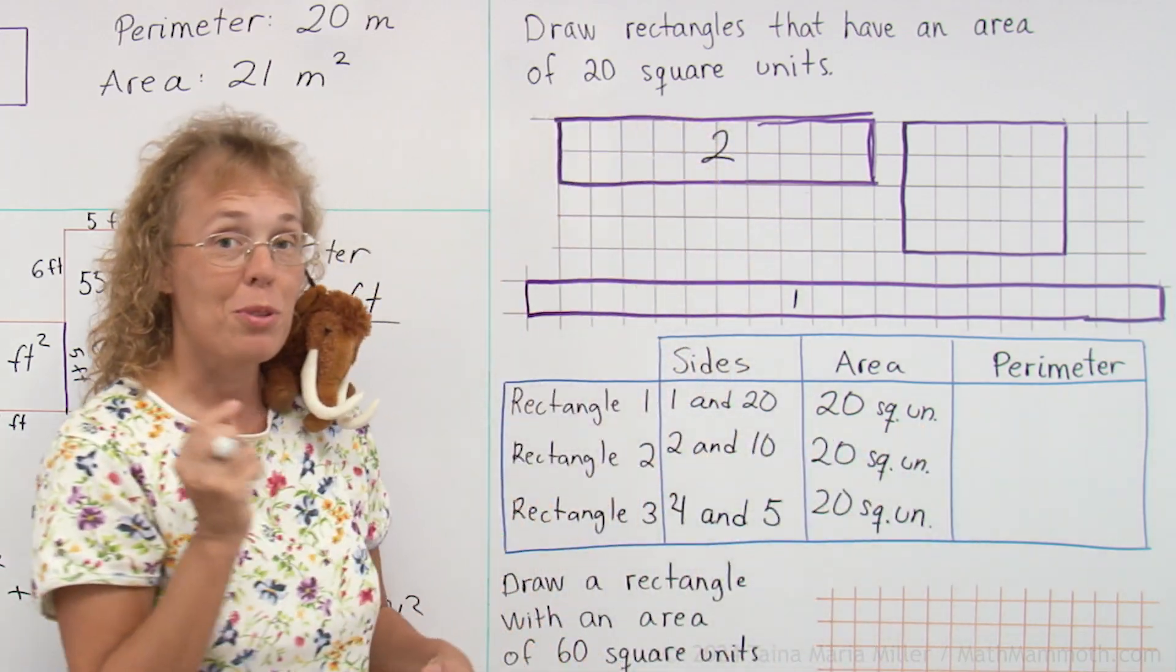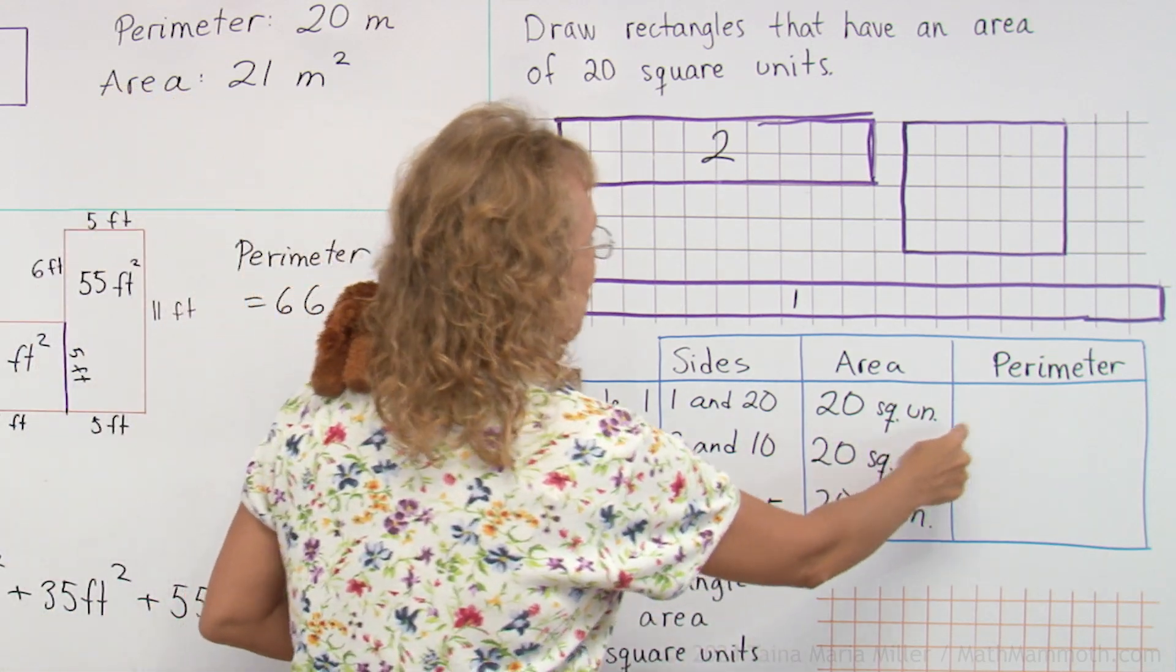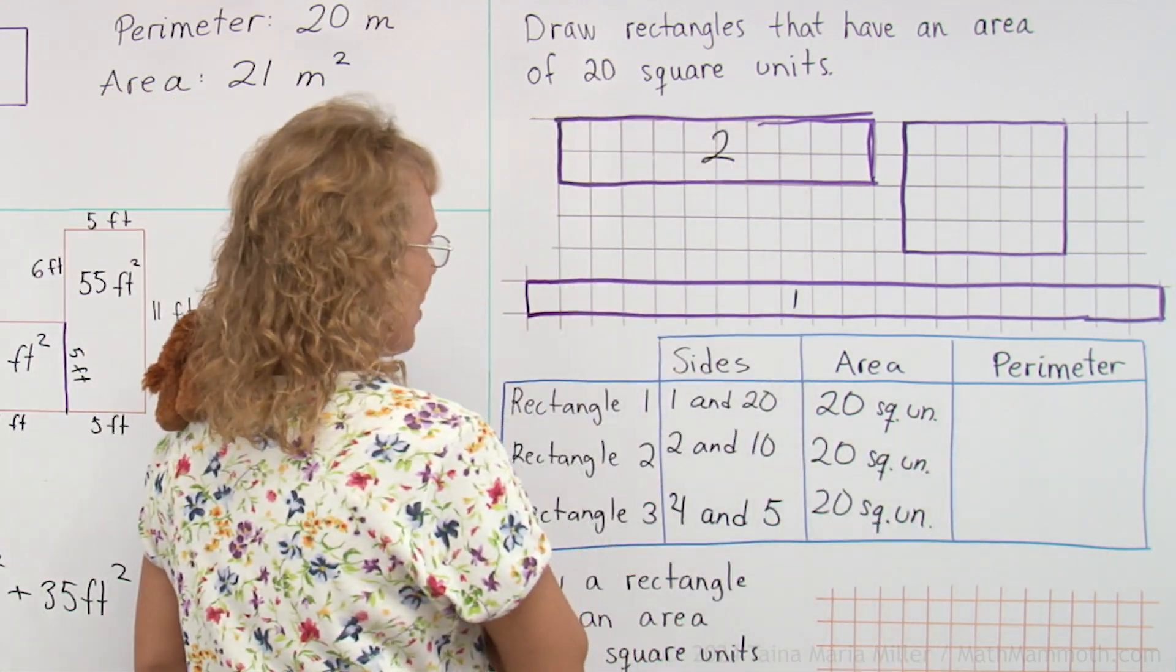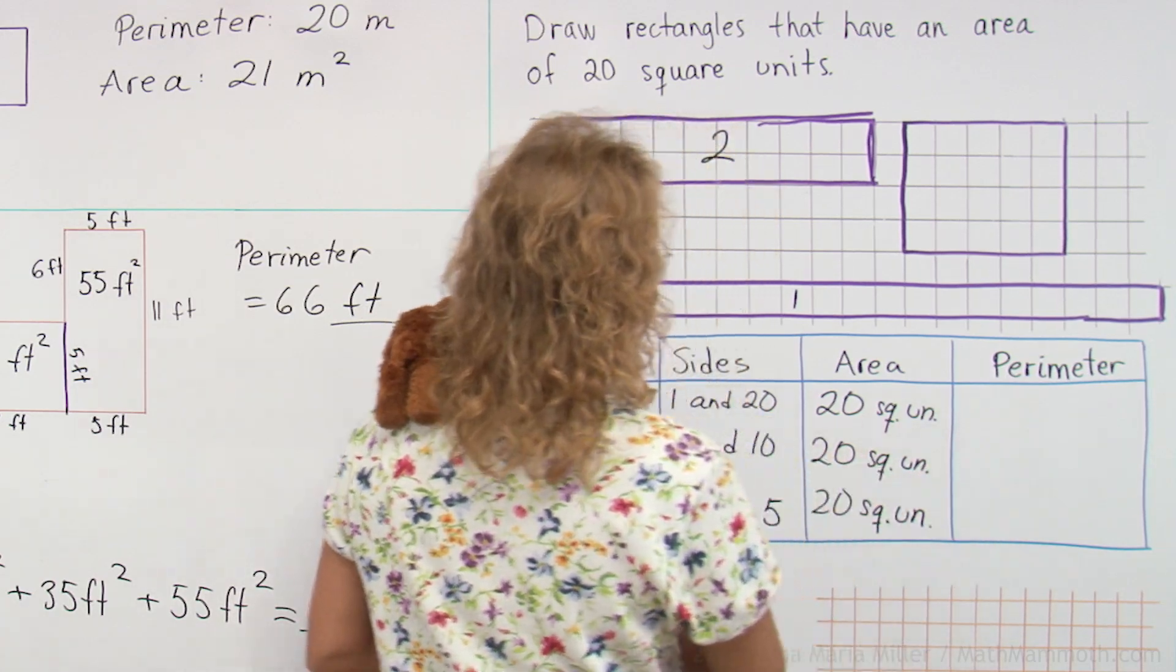But what about the perimeter? Let's calculate the perimeter for each rectangle. And that's not going to be the same. It's going to differ.